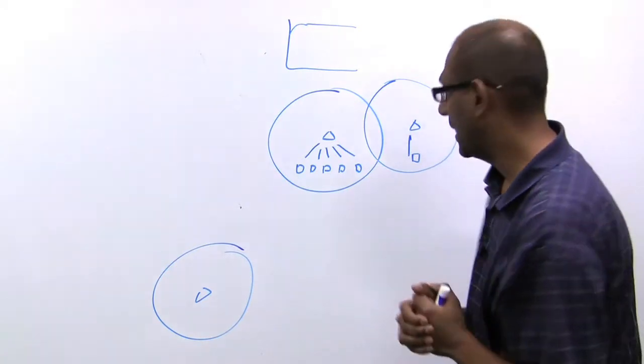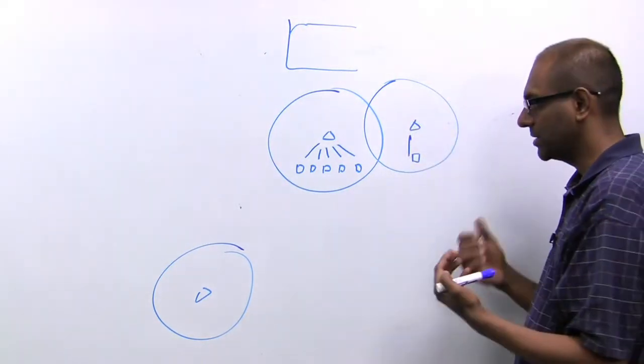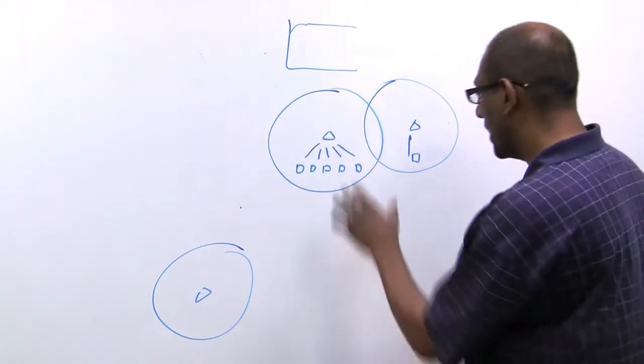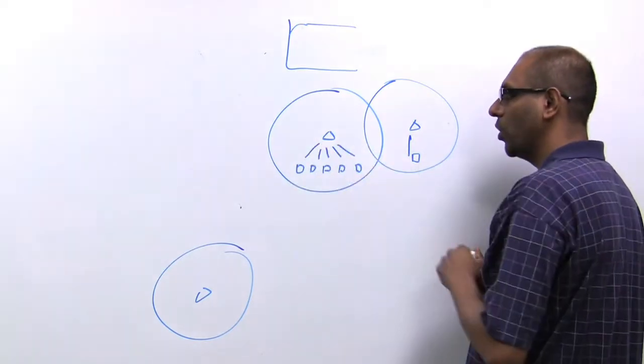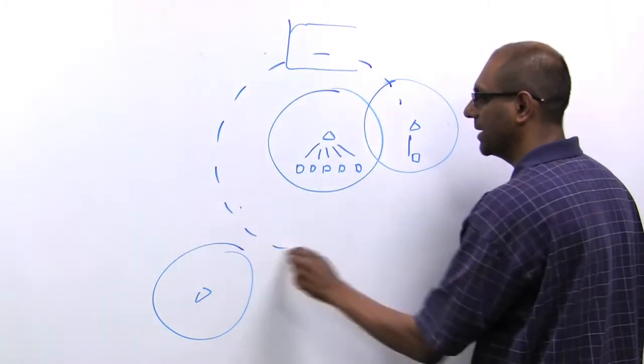So the way we do that is that each access point advertises its load on each of the different traffic classes. So every access point understands not only its own load, it understands the load in its entire neighborhood.